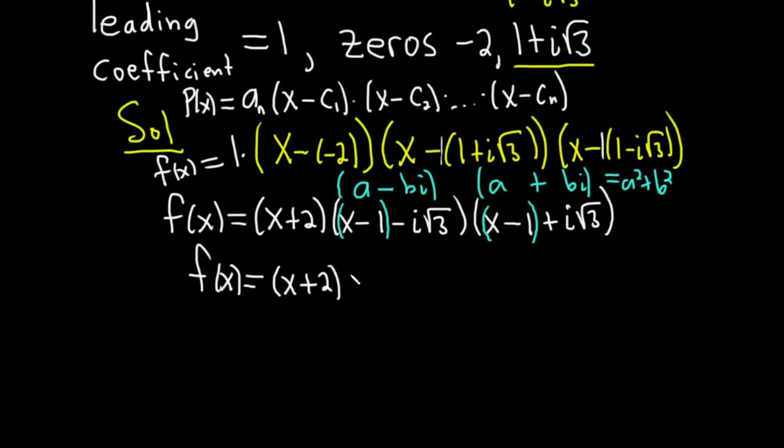is going to give us a squared, which is x minus 1 squared, plus, there's a plus sign there in the formula, the square root of 3 squared. Boom. So this is f of x equals x plus 2.